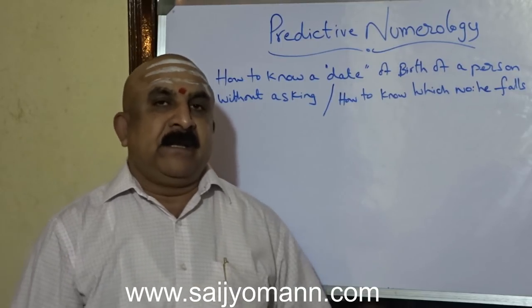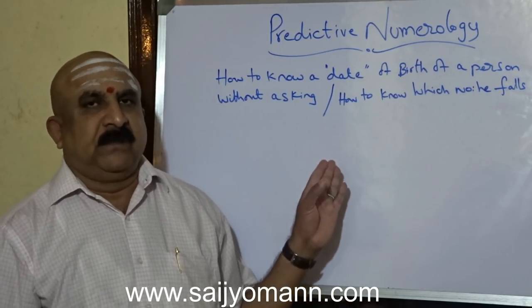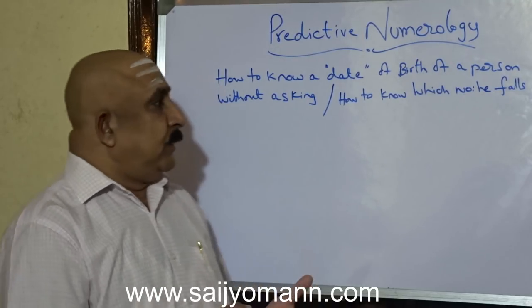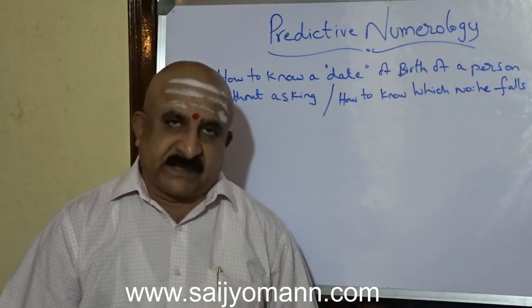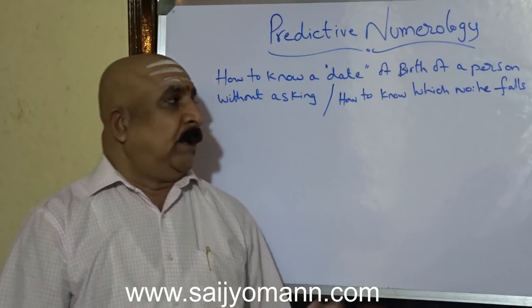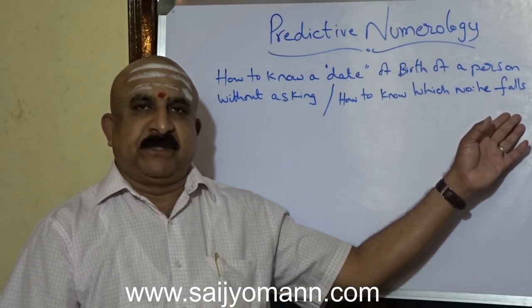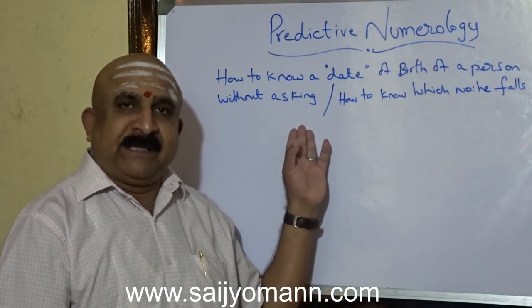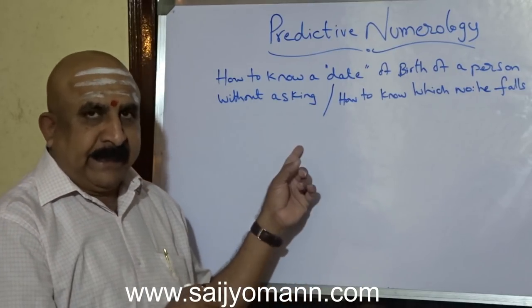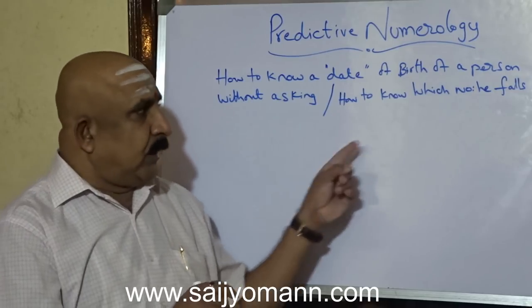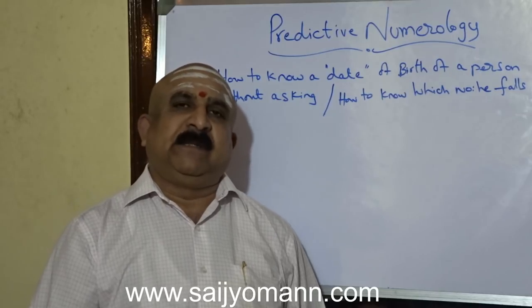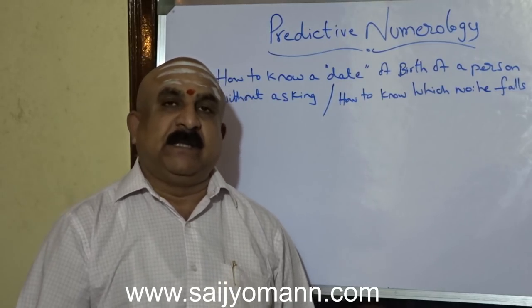Today, again, one more unique question. It's a unique question because today we are going to learn about how to know the date of birth of a person without asking him — how to know the fadic number of a person, or only the date in the date of birth, not the complete date of birth. How is this possible? Yes, it is possible.